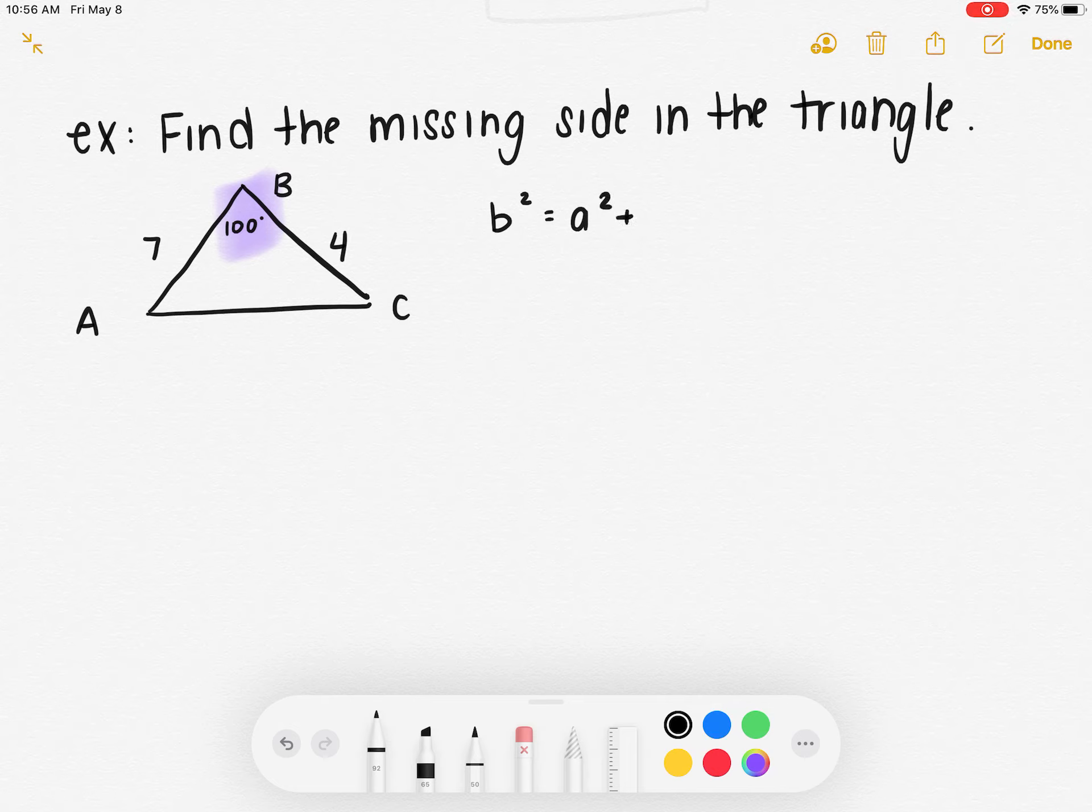It's a squared plus c squared minus 2ac cosine of angle B. Now I just need to go in and plug in what I know. So I know angle B. I know that 4 is across from angle A, that makes it side A. And 7 is across from C, so that makes it side C.